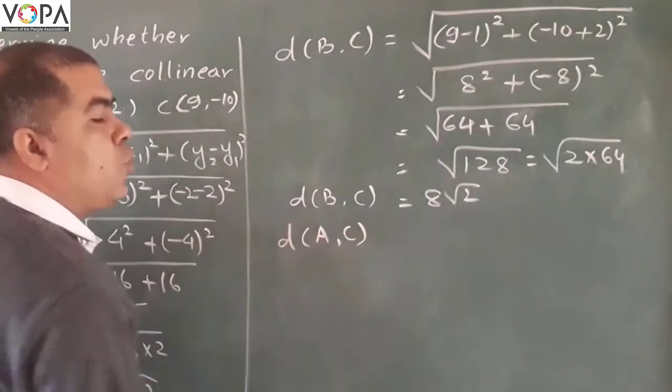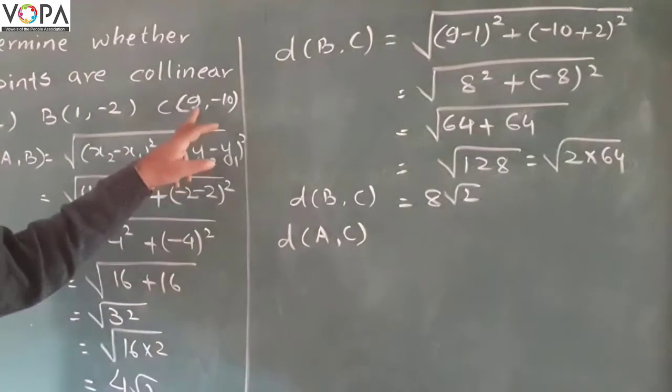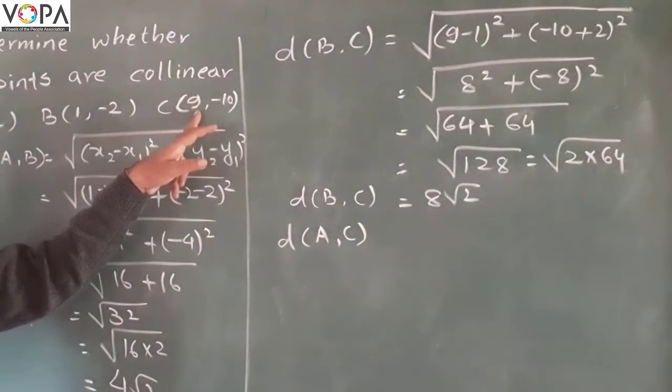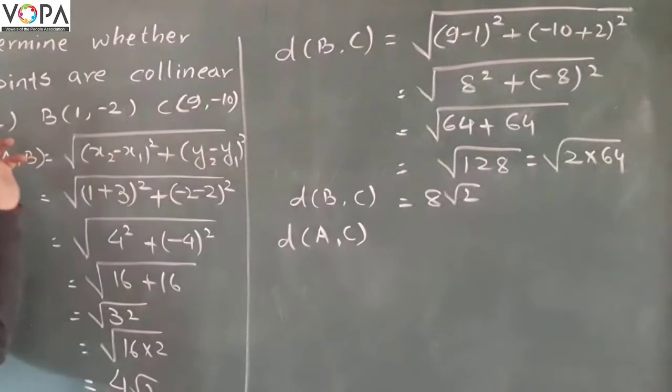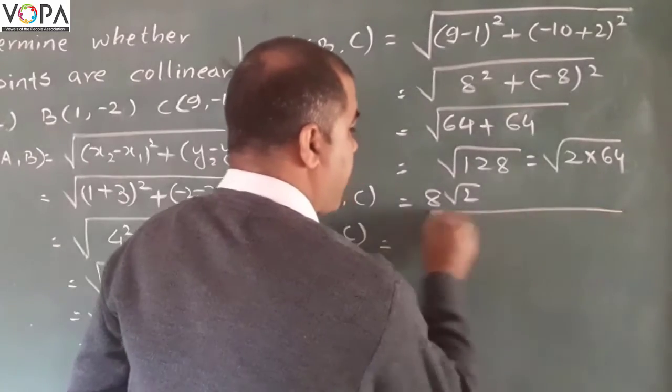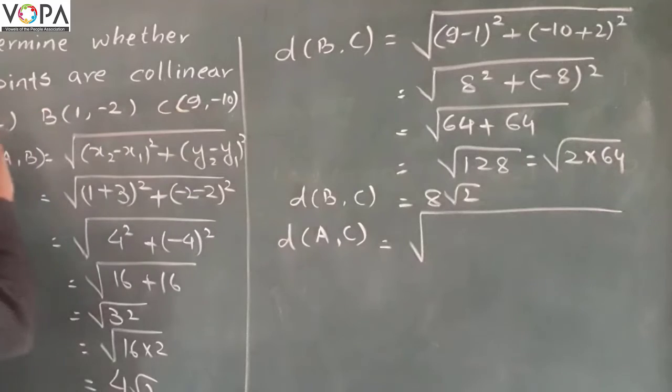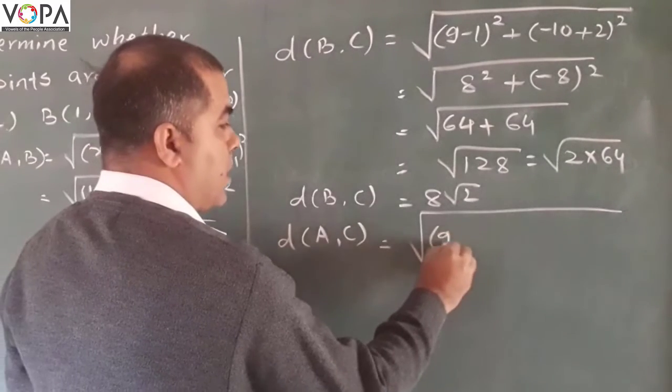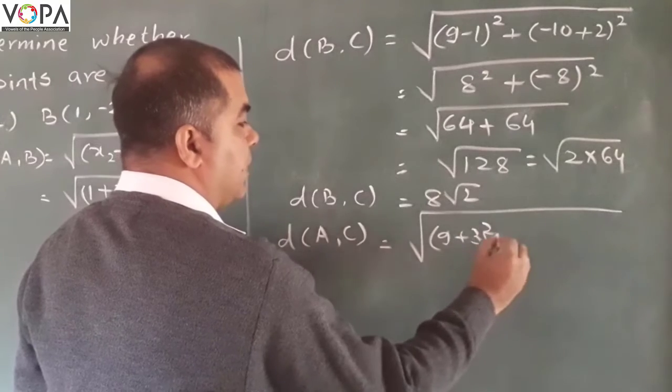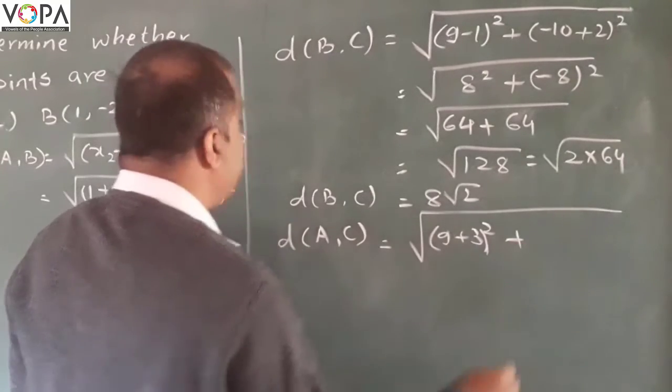Again, no need to write the formula. Now consider this is x1 and y1, and this is x2, y2. Now again: 9 minus negative 3, that will be plus, 9 plus 3, squared, plus negative 10 and plus—negative 10 minus 2.